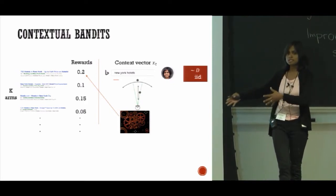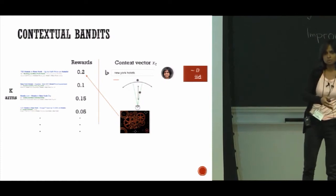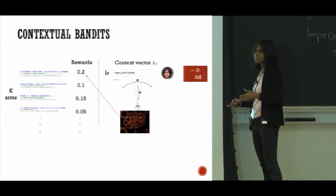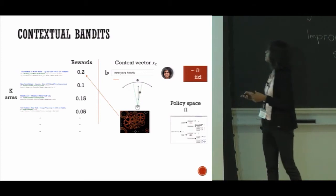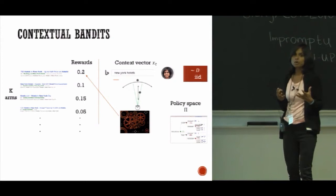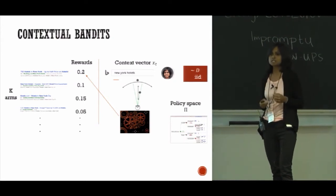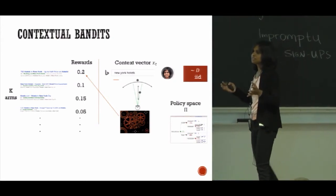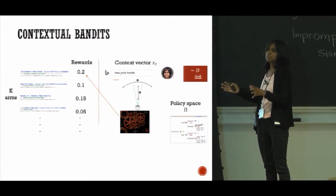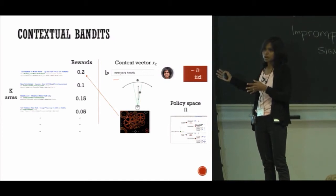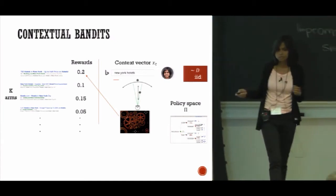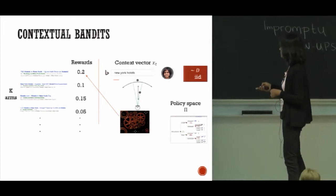It's trying to learn a policy mapping the context to the rewards. To make the problem more interesting and more structured, we also consider that the algorithm is deciding between policies from a limited policy space. So let's say I believe that linear policies are good enough for my problem and I only want to find the best linear policy, or let's say I want to only consider decision trees of a certain size. That makes the problem more tractable and interesting.